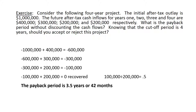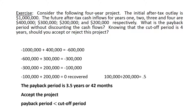The question also asks whether to accept or reject the project. We solved for the payback period, which is 3.5 years. We have a cutoff period of 4 years — a period that the financial manager decides: if I can cover the cost within 4 years, I will accept it. If the payback period is less than the cutoff period, then we accept the project. If the payback period is greater than the cutoff period, we reject the project. In our case, we accept the project because the payback period of 3.5 years is less than the cutoff period of 4 years.